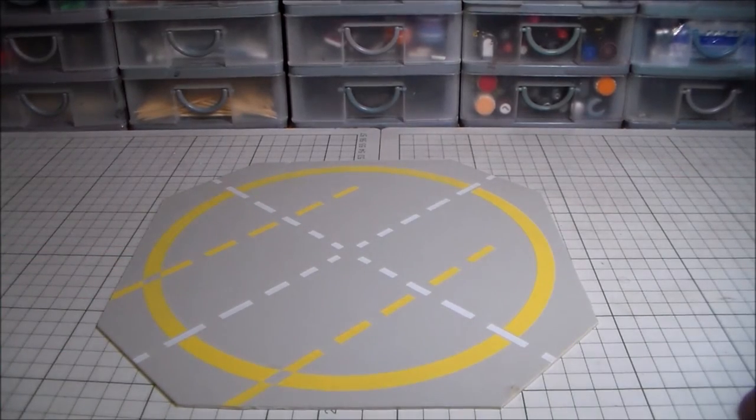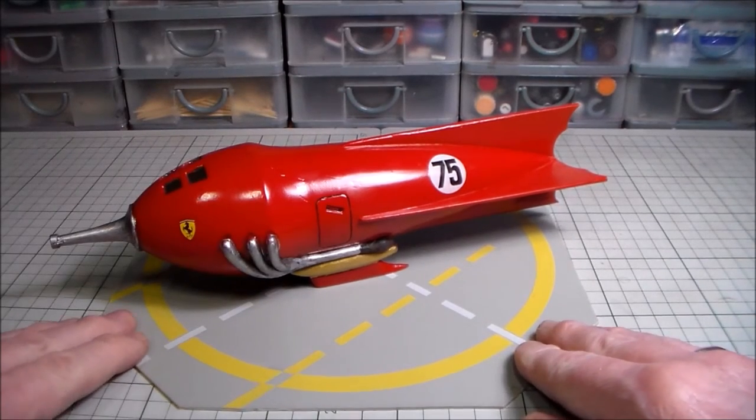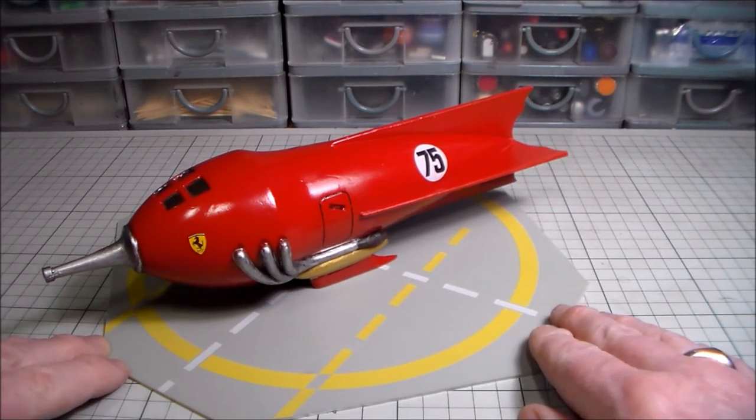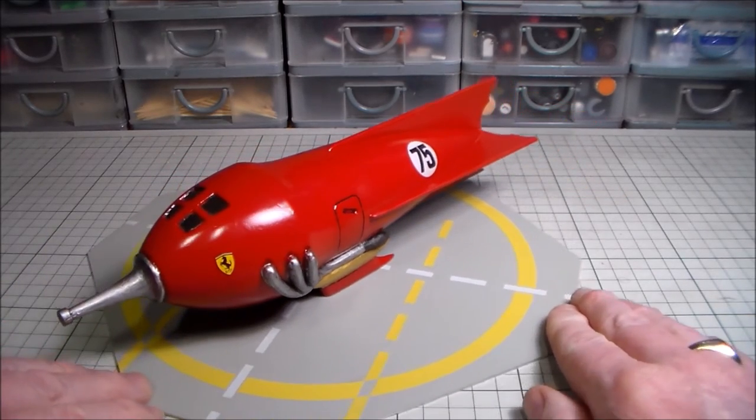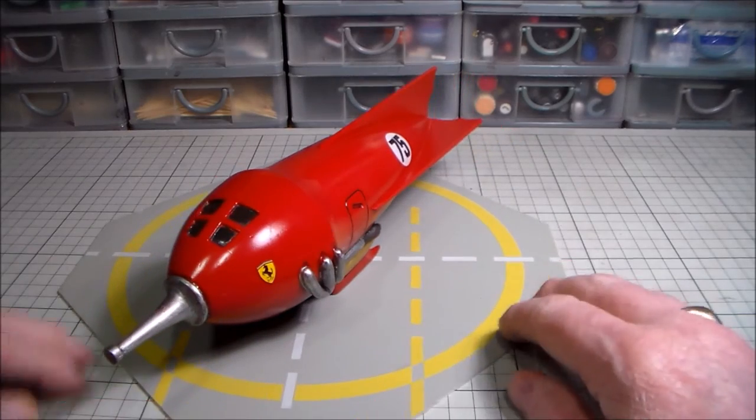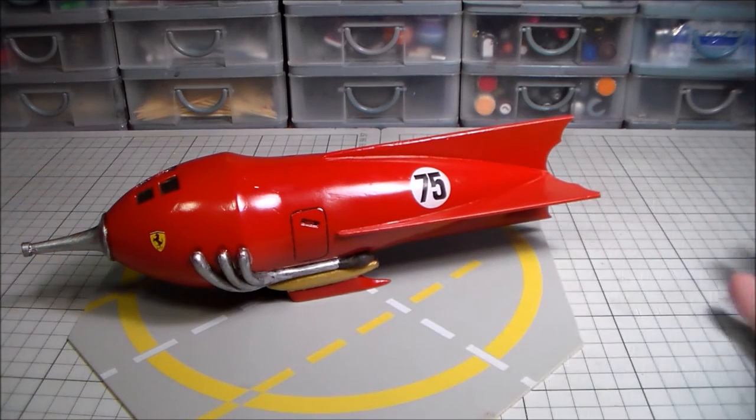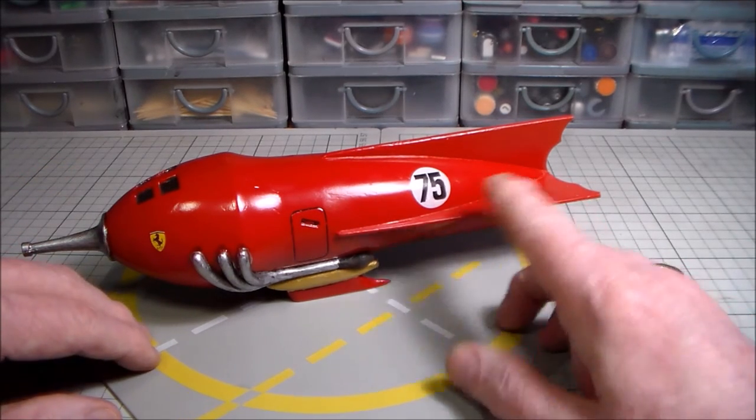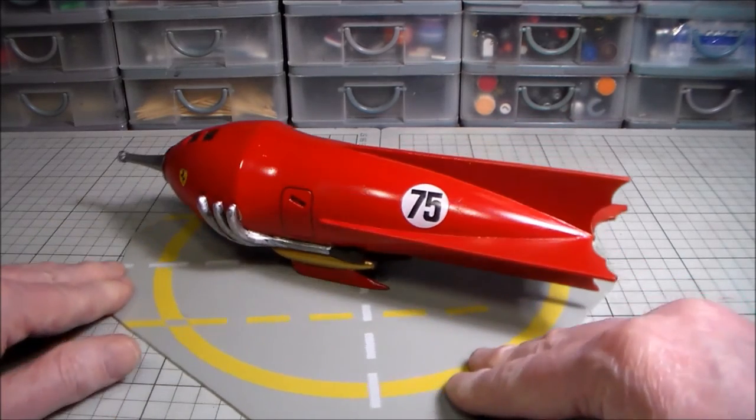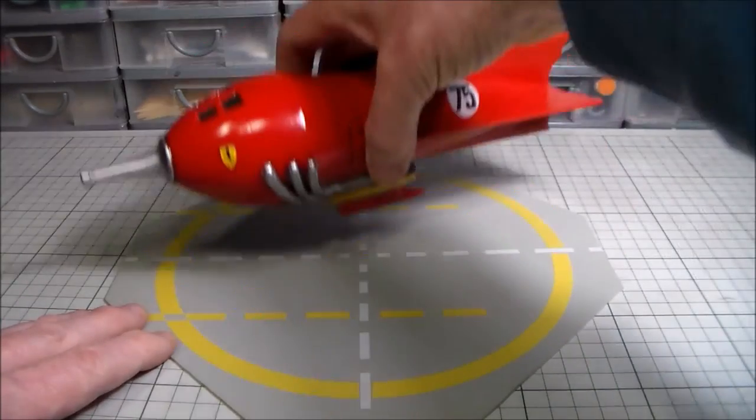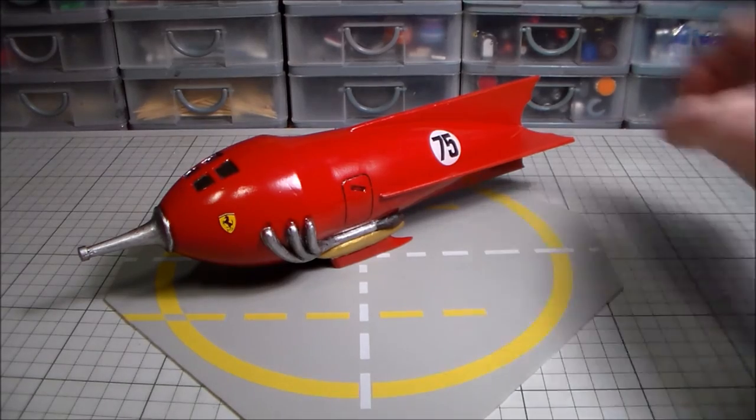I've got this one here. This is a Ming the Merciless spaceship, or rocket ship, as they used to call it in those days, from Buck Rogers, the old black and white TV shows. And all I did with this particular one is I painted it red rather than the usual silver, put decals on for a Ferrari and made it into Ming the Merciless's sports car, which looks cool. And you could put a helicopter on there, or loads of things.